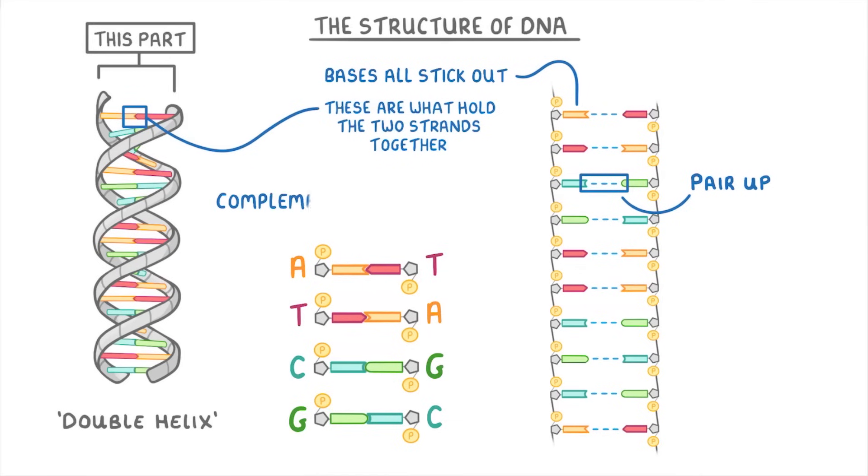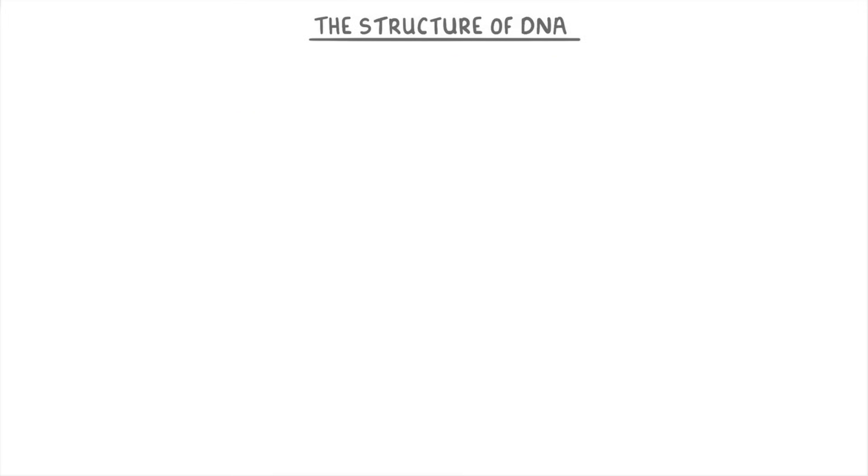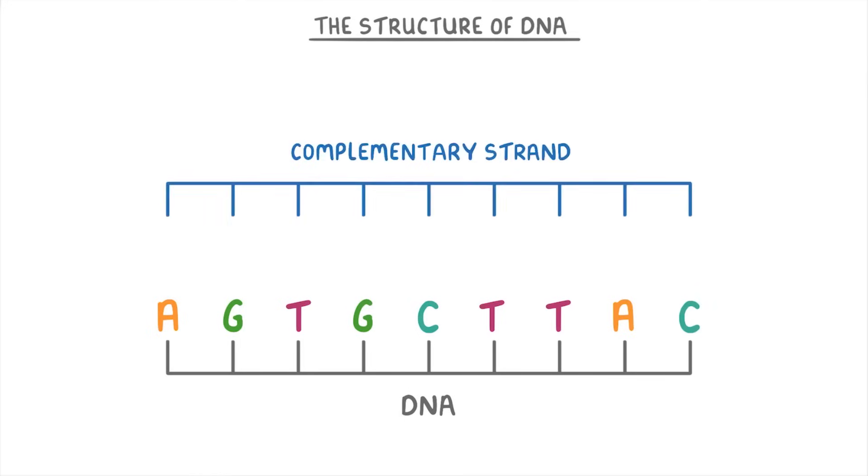We call this concept complementary base pairing, and it allows us to figure out what the complementary sequence of a strand will be. For example, if we have a strand of DNA that reads A-G-T-G-C-T-T-A-C, then we can use this sequence to work out what the sequence of bases on the complementary strand must be, because we know that A always pairs to T and G always pairs to C.